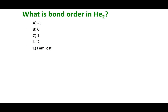Let's do the three-panel picture for the He2 molecule. The helium atom has a 1s orbital with two electrons in it. Combining it with another helium atom — which also has a 1s orbital with two electrons — to make He2, I take the atomic orbitals and combine them constructively and destructively. This gives sigma 1s and sigma star 1s molecular orbitals.